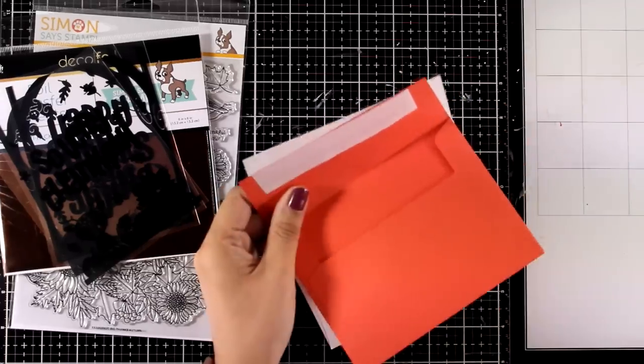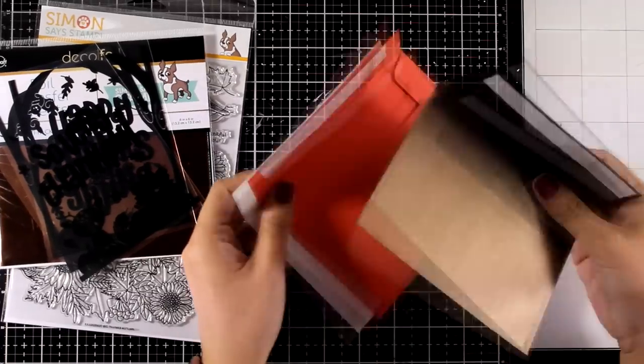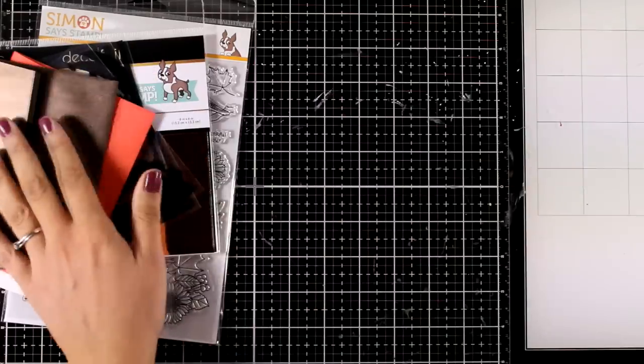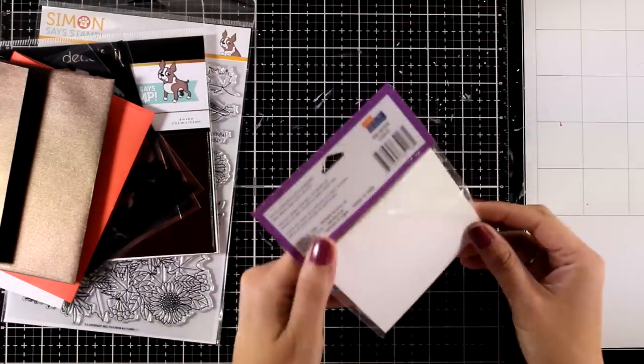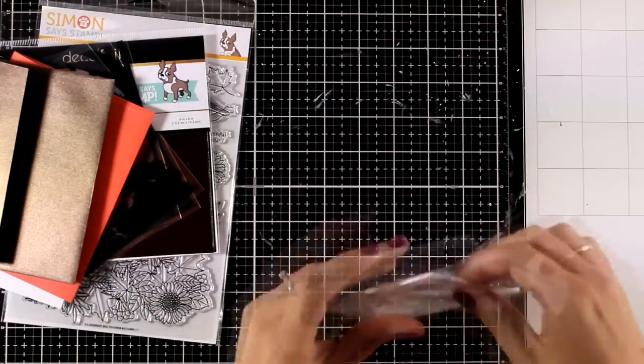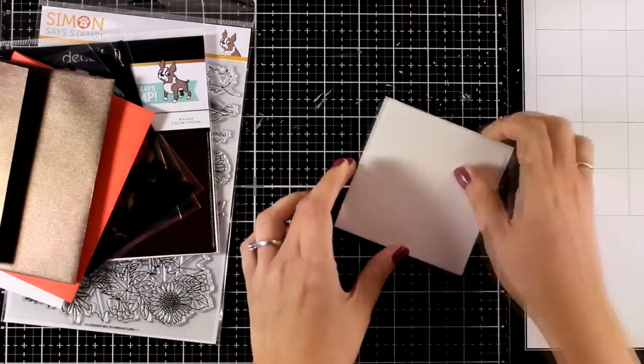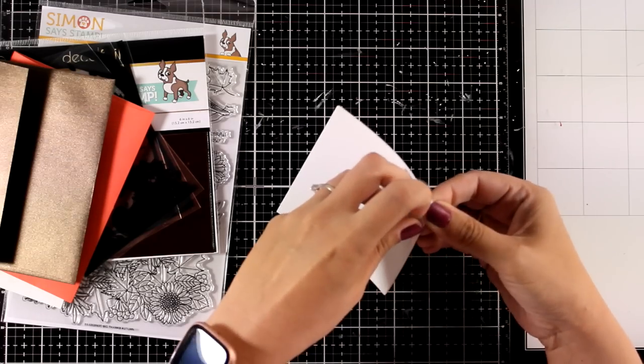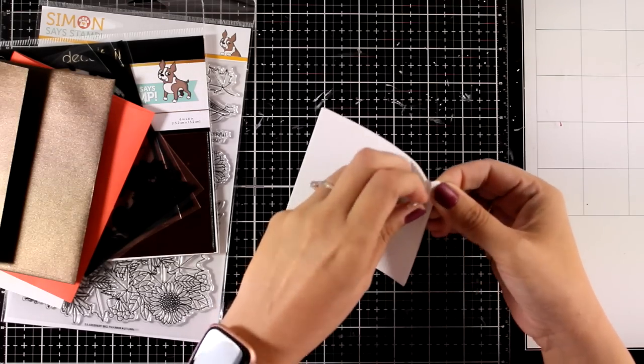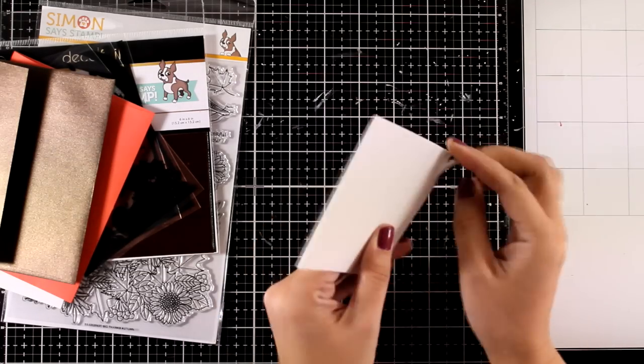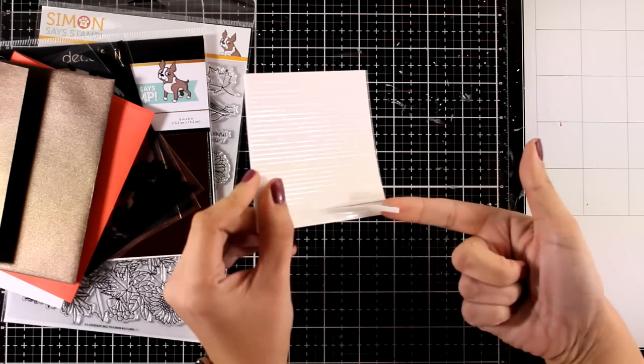The kit also includes some basic supplies such as these three envelopes. There is also a pack of foam strips which are by Darice. These are very thin, super super thin, perfect for sticking them at the back of tiny little elements or even at the back of some of your sentiment strips.